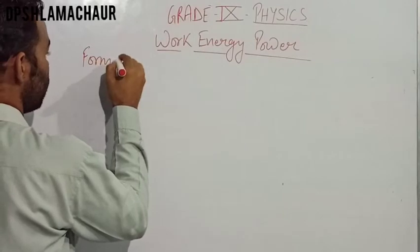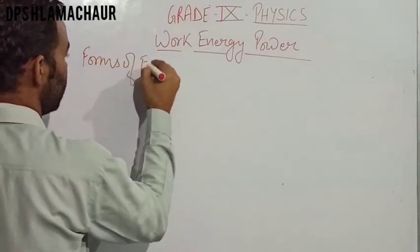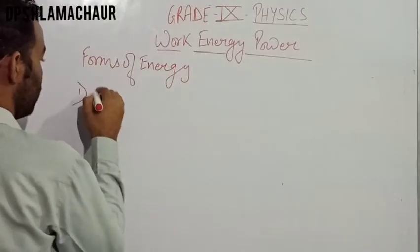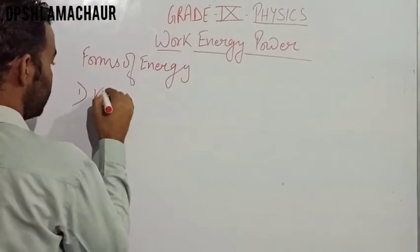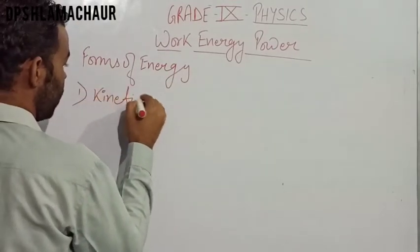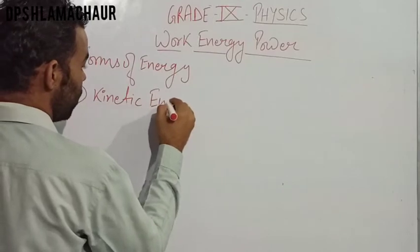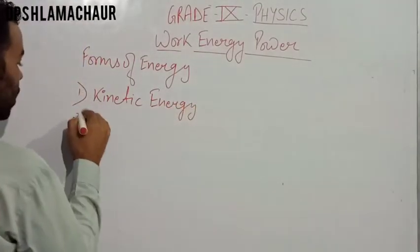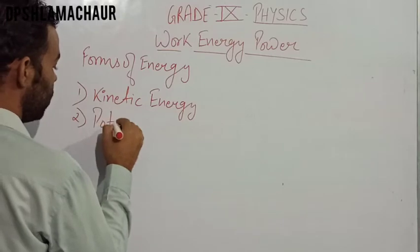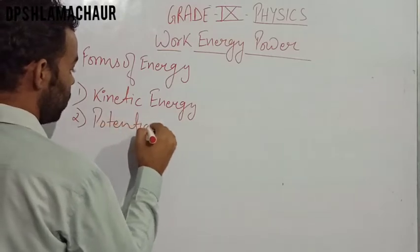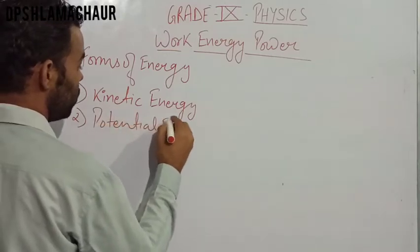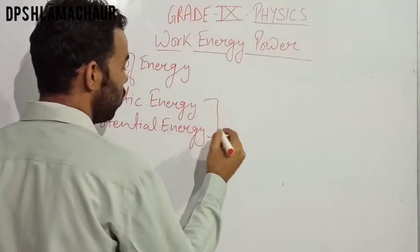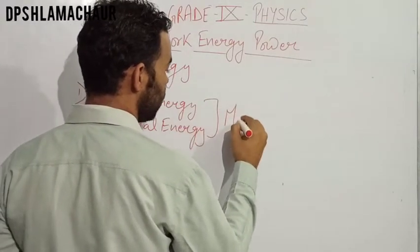Forms of energy: the first main form is kinetic energy, and the second is potential energy. These two forms together we call mechanical energy.